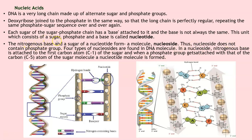This unit consisting of a sugar, phosphate, and a base is called a nucleotide, which has three components: the phosphate group, the sugar, and the base. If the nitrogenous base and the sugar are present but the phosphate group is absent, then it is called a nucleoside. Thus, a nucleoside does not contain a phosphate group. Four types of nucleosides are found in the DNA molecule.